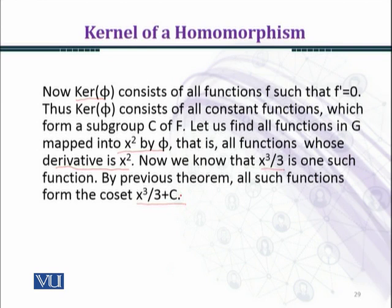And x³/3 + C has derivative x², and C is a kernel of φ and this is a subgroup. We have seen here that the cosets are all in this form.